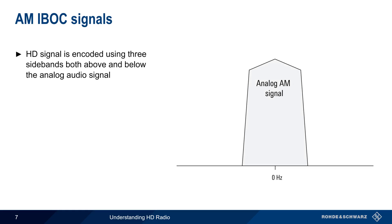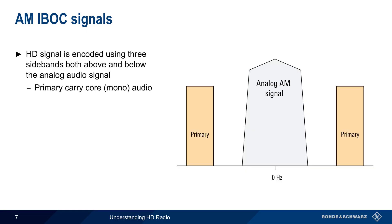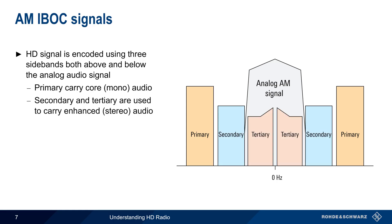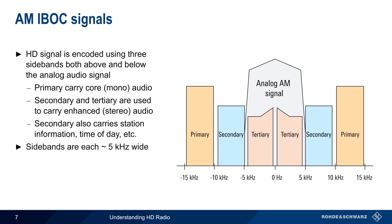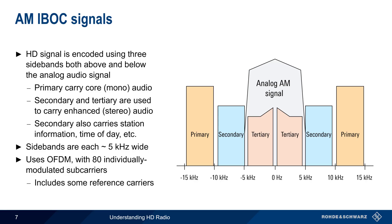AM HD radio also uses sidebands, but in this case there are three sidebands above and three sidebands below the analog audio signal. The primary sidebands carry the core or mono audio, and the secondary and tertiary are used to carry enhanced or stereo audio. In addition, the secondary sidebands also carry data such as station information, time of day, etc. Each of these sidebands is approximately 5 kHz wide. Like FM HD radio, these sidebands are modulated using OFDM, with 80 individually modulated carriers per sideband, including some reference carriers. As can be seen from this and the previous slide, the AM and FM HD radio waveforms are significantly different, both in spectrum and in composition.